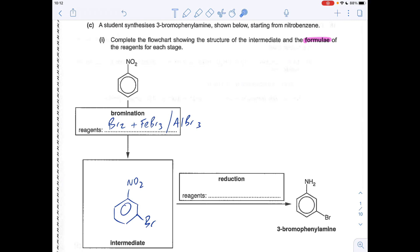And the product is this one here. And obviously, we've got the bromine at position three. So it's got to be at position three in the intermediate.